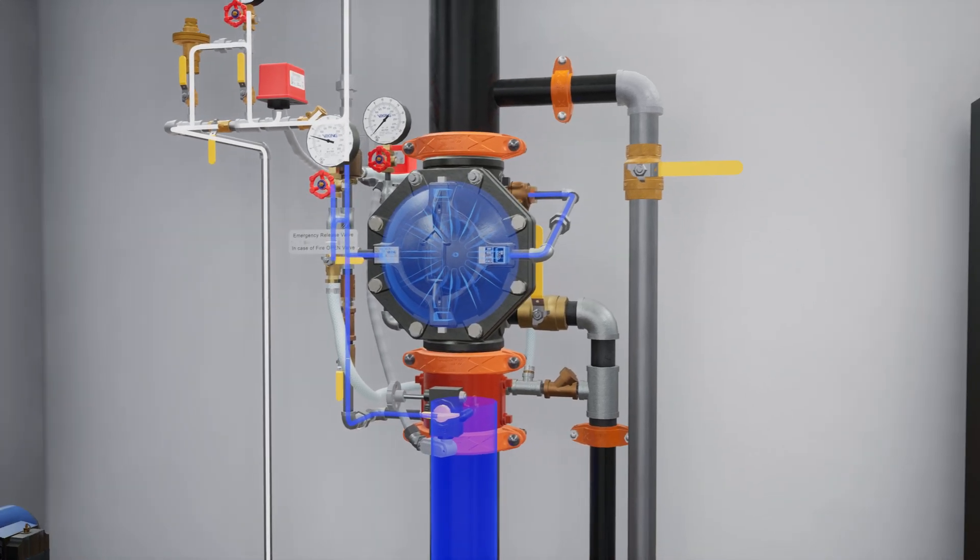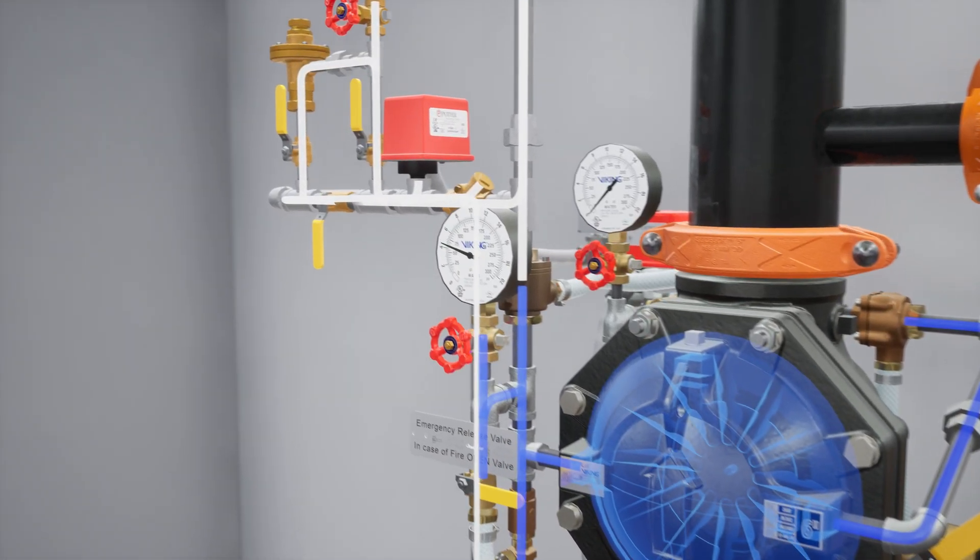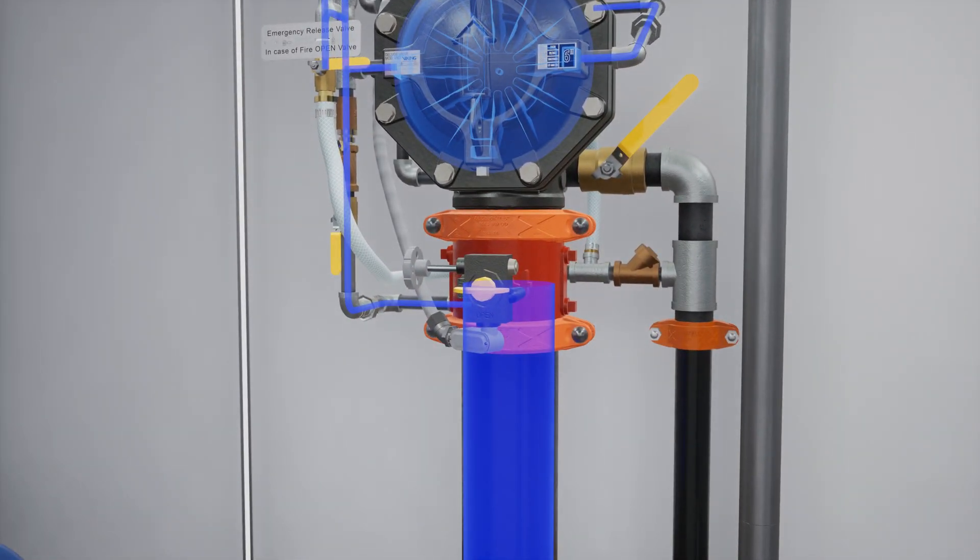Next, partially open the flow test valve. Verify water pressure has been established in the prime chamber. Slightly open the water supply control valve and begin introducing water into the system.